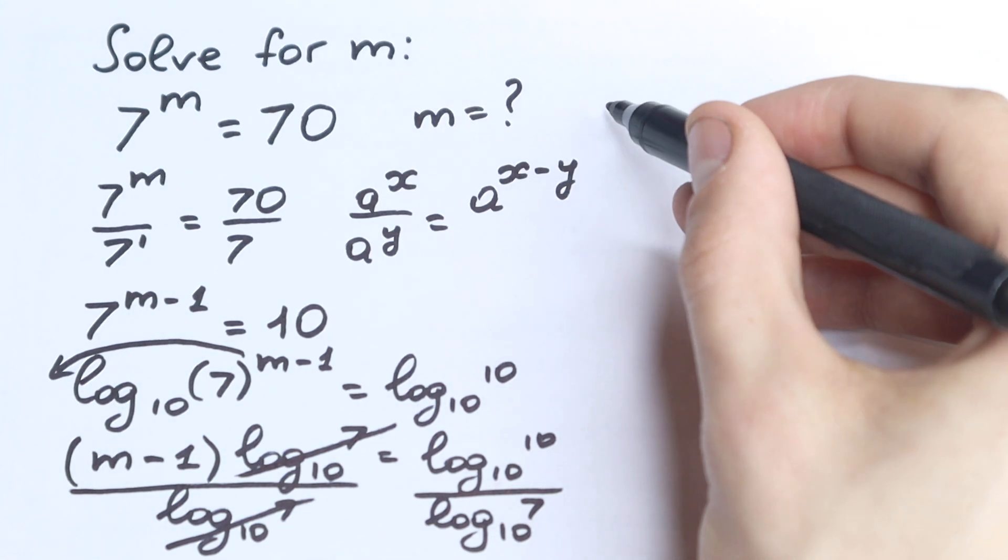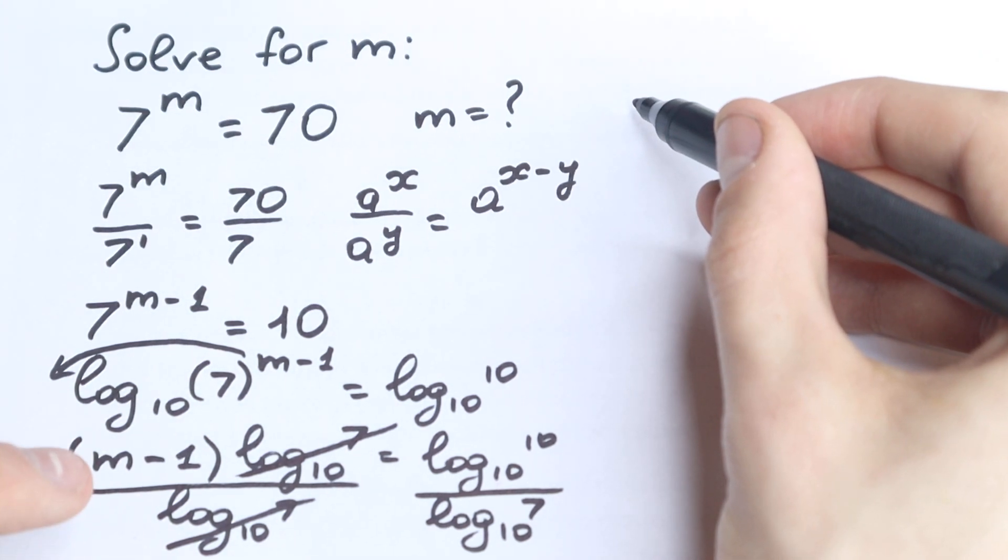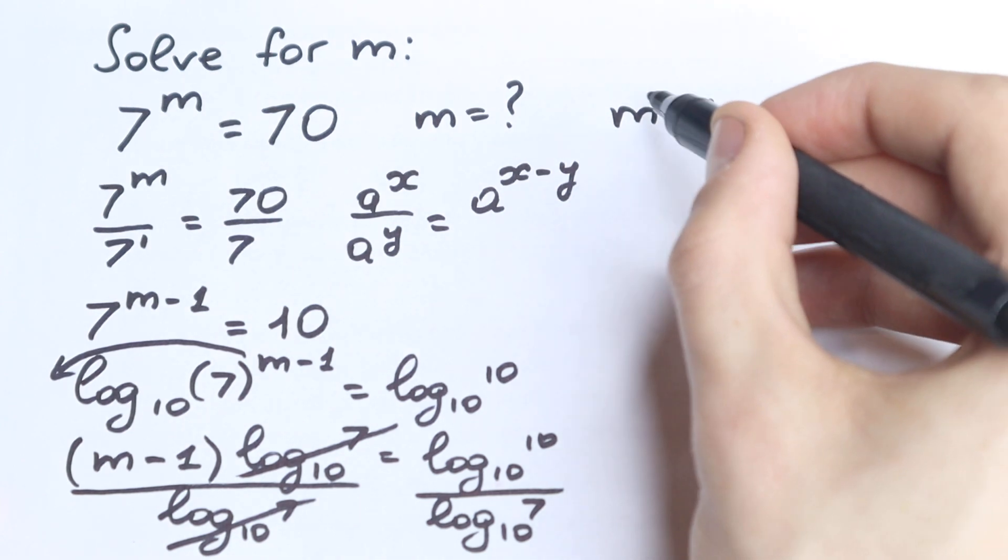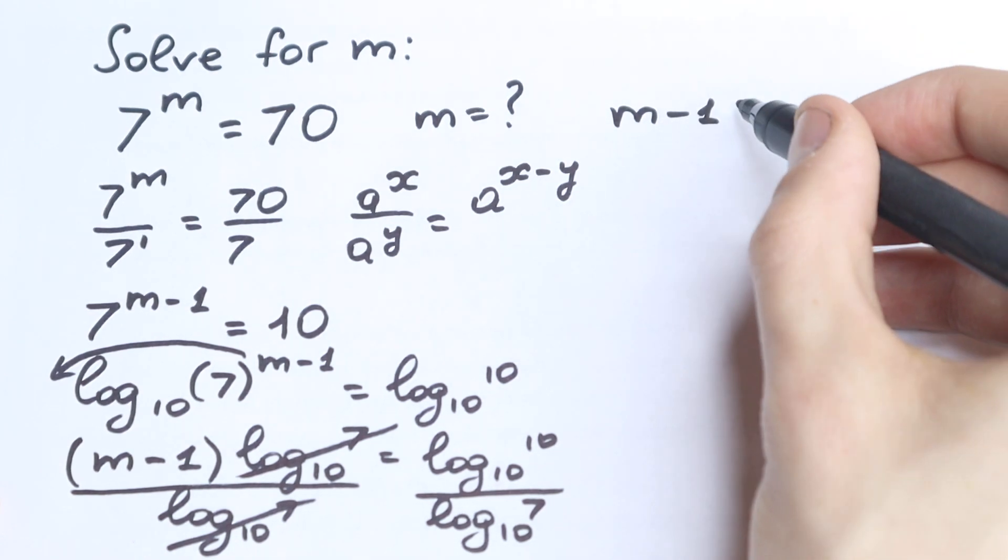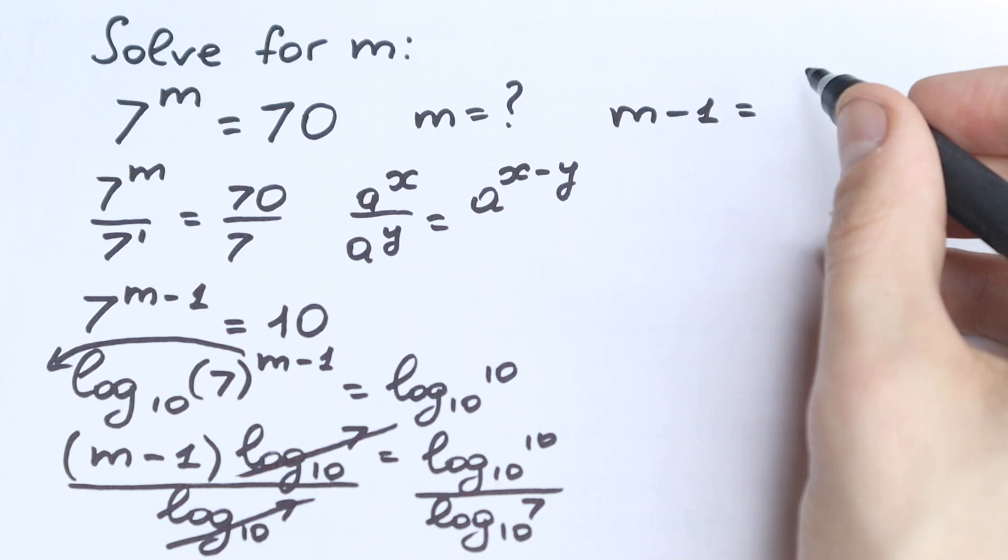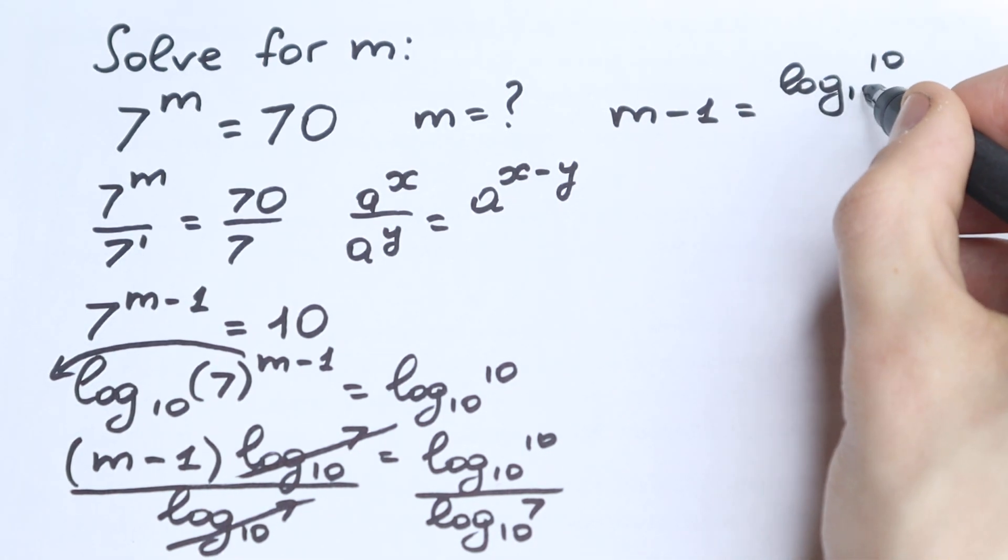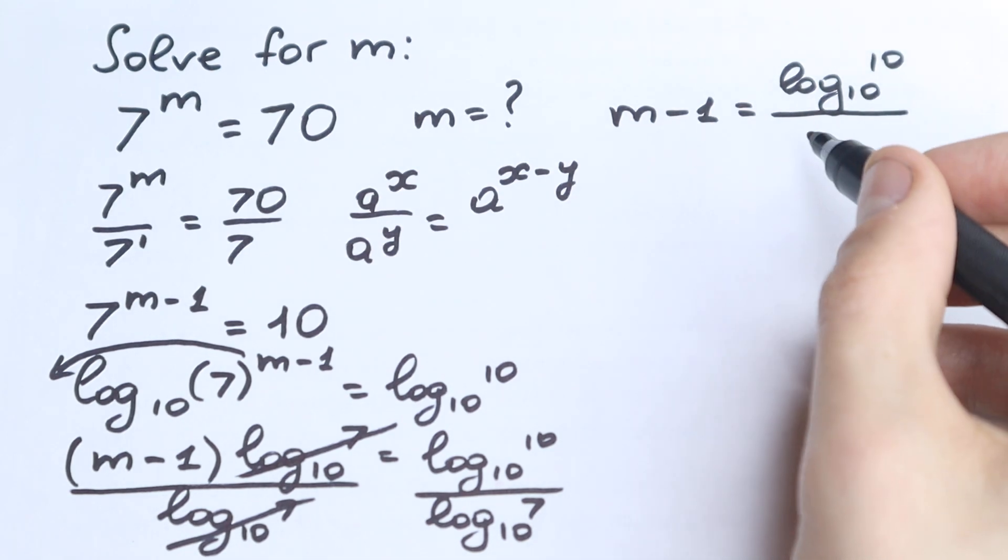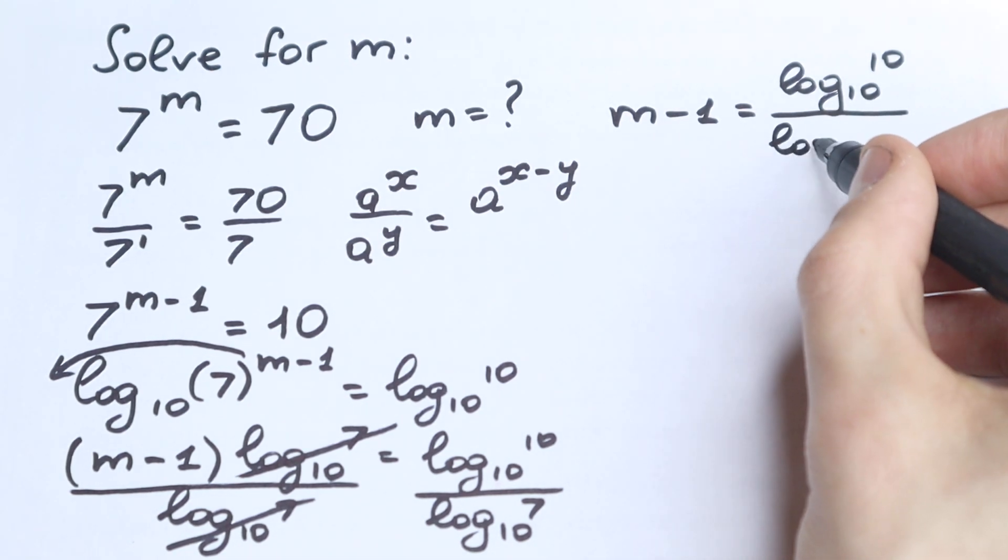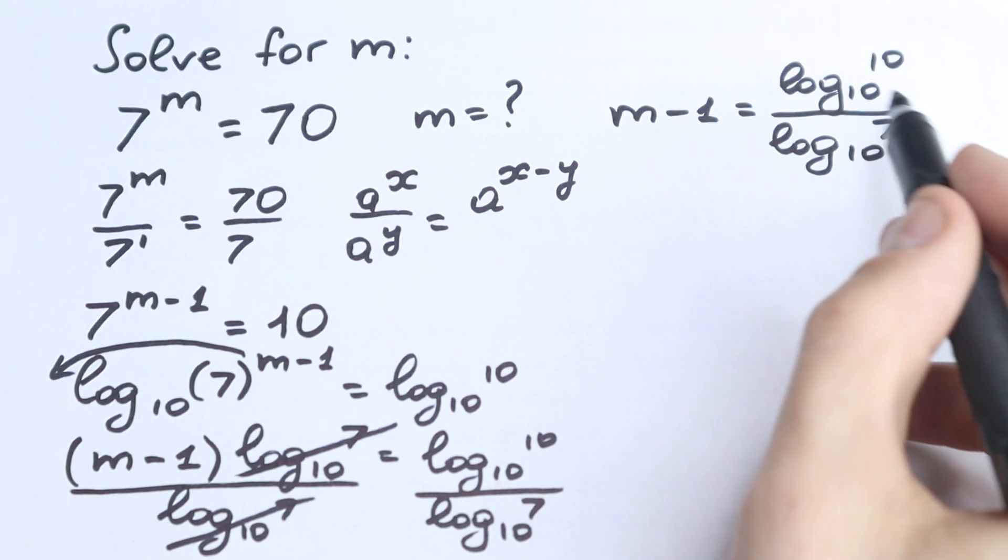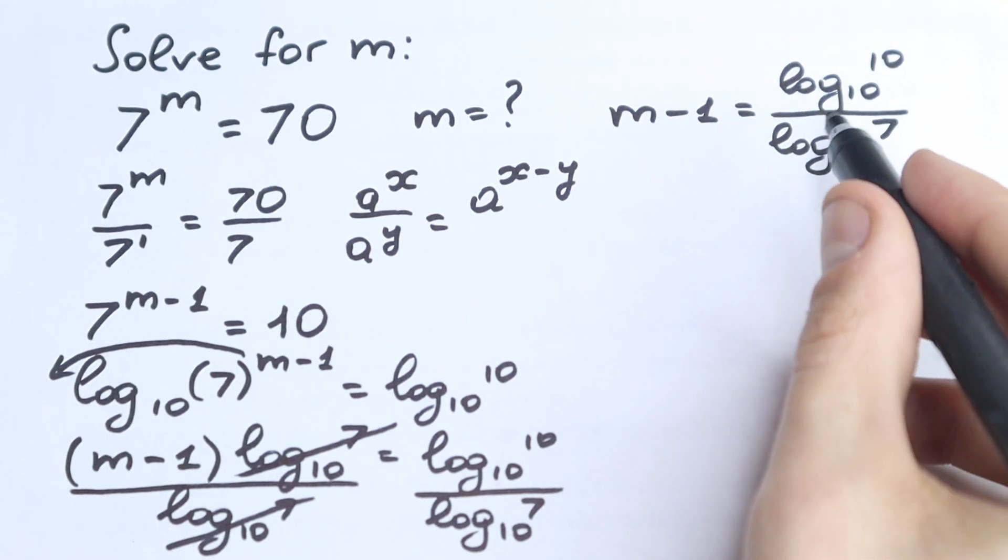And we have m minus 1 on the left-hand side, equal to log₁₀(10) all over log₁₀(7). And log₁₀(10) equals 1 obviously.